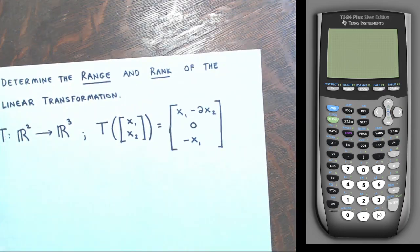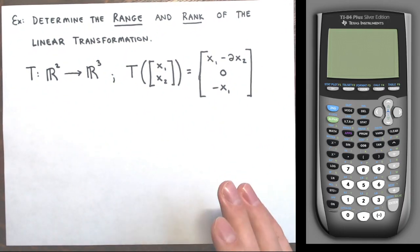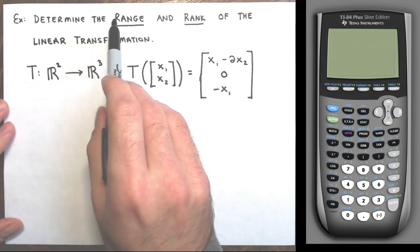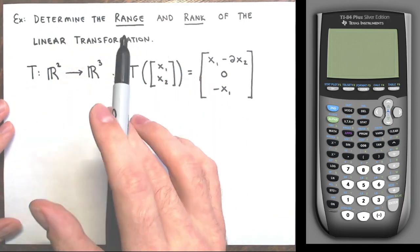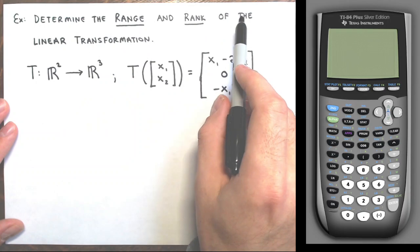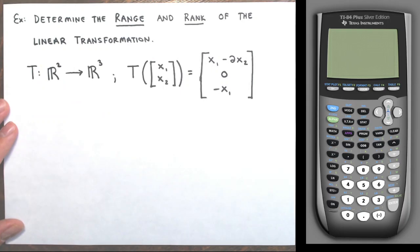I have four examples to work through — the same four from my previous video on null space and nullity — but this time I'm asking you to determine the range and rank, not the null space or nullity. Again, these are all linear transformations.